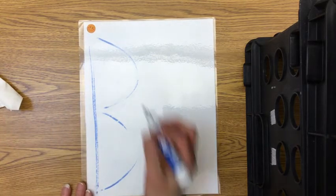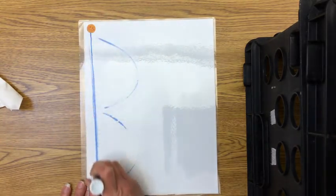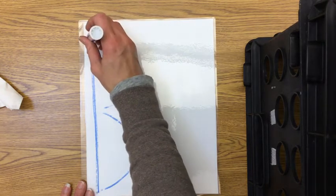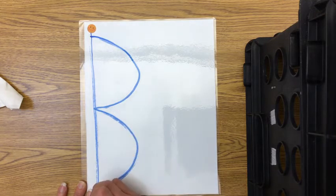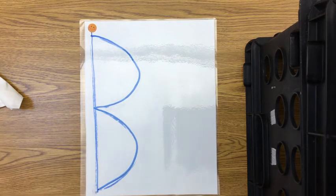Now let's try it again. Big line down, hop to the top, little curve to the middle, little curve to the bottom to make the letter B.